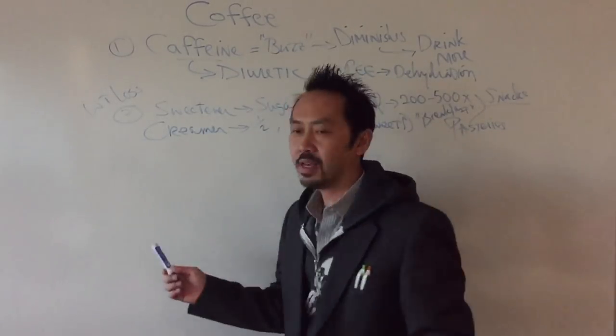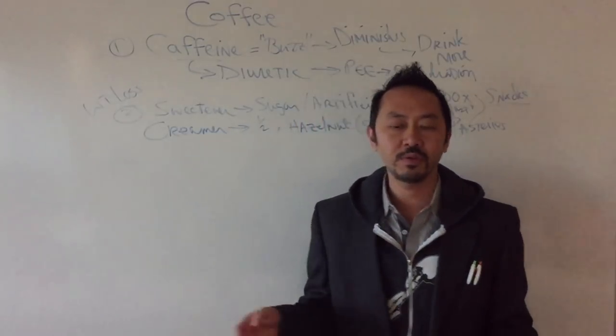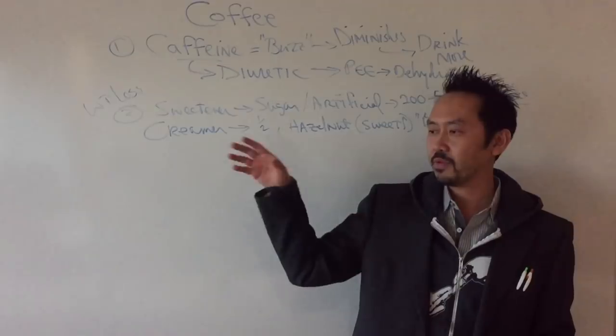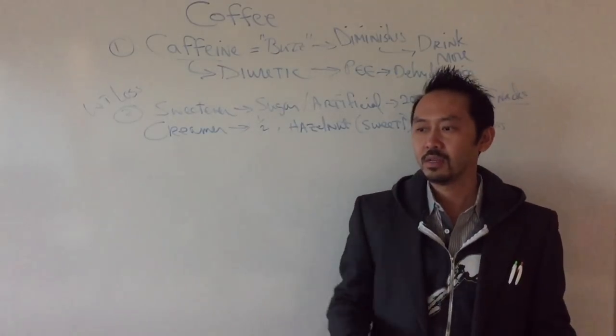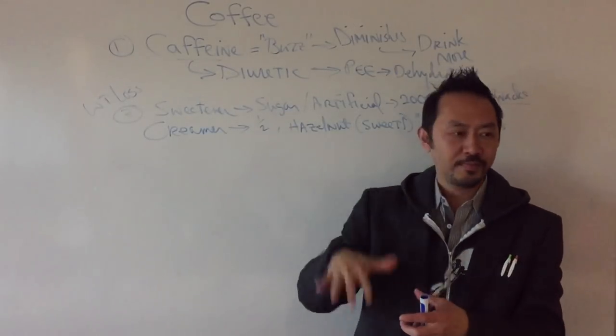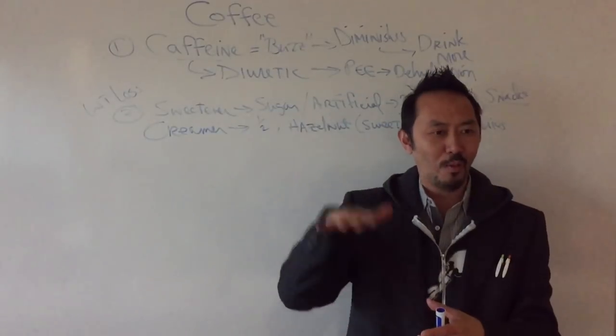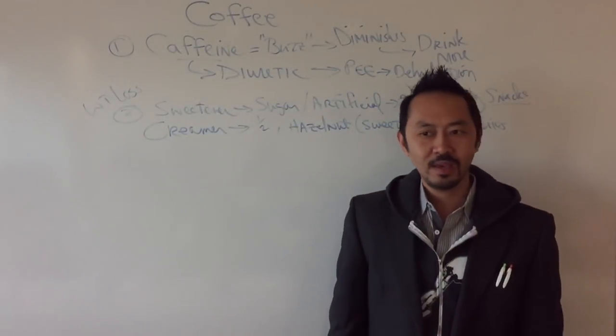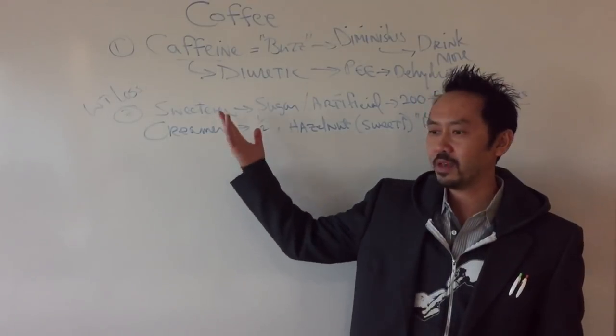At the end of the day, you're increasing your calories. 'But Dr. Vong, it's a low calorie creamer.' 'Well, it's only 40 calories, Dr. Vong.' Yeah, it's 40 calories per squirt. And you're putting like four or five squirts. And that's only one cup. You have two cups.